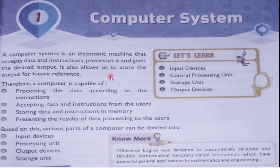For example, if you have to add two numbers, your input would be typing two plus two using your keyboard. That is called input. Now your computer will take that input and process it — it will check what it has to do. Since we typed two plus two, it will add the numbers and give you the desired output, which is the result four.